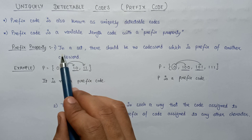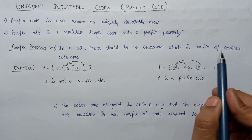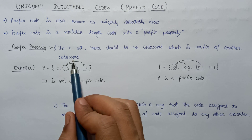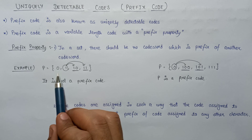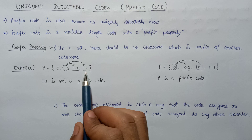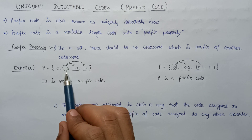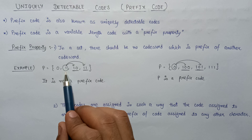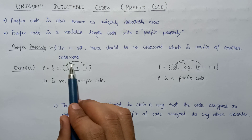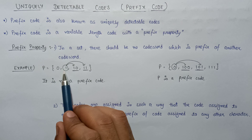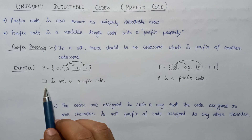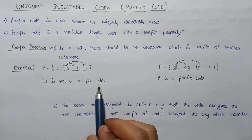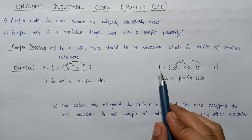According to the prefix property, in a set there should be no code word which is a prefix of another code word. Here is an example of set P consisting of four code words: 0, 1, 10, and 11. If we analyze this set, we find that the code word 1 is present as a prefix in the code word 10, and also as a prefix in the code word 11. So this is not a valid prefix code.